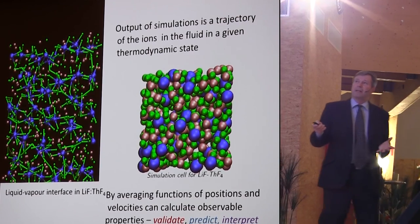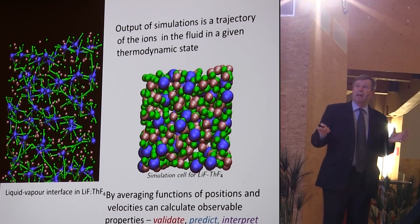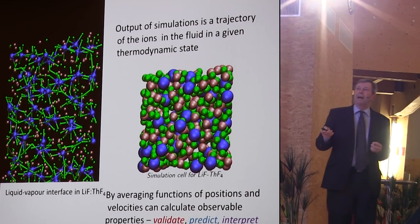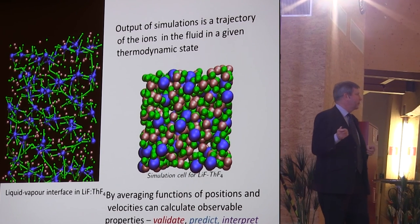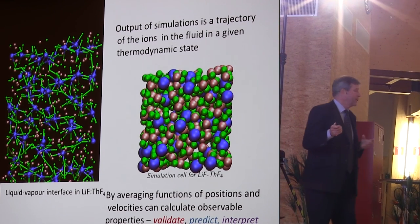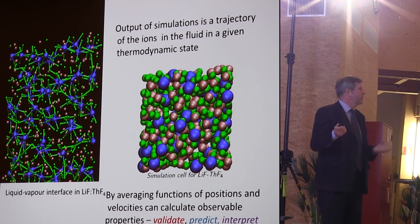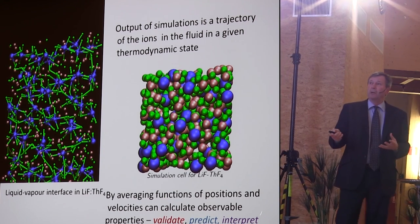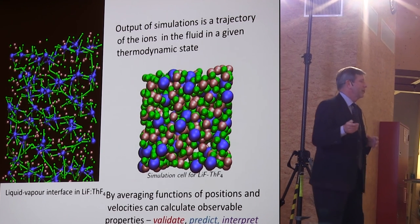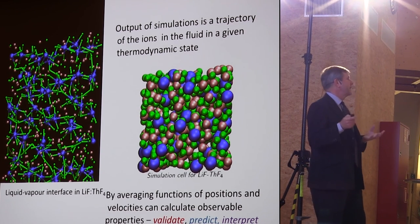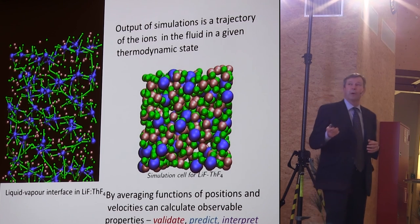The general process then is one sets up a simulation, one seeks to validate it by comparing predictions with experiment, one then makes predictions on quantities which are not known, and you also provide the armory to provide chemical interpretations of the way different materials behave.